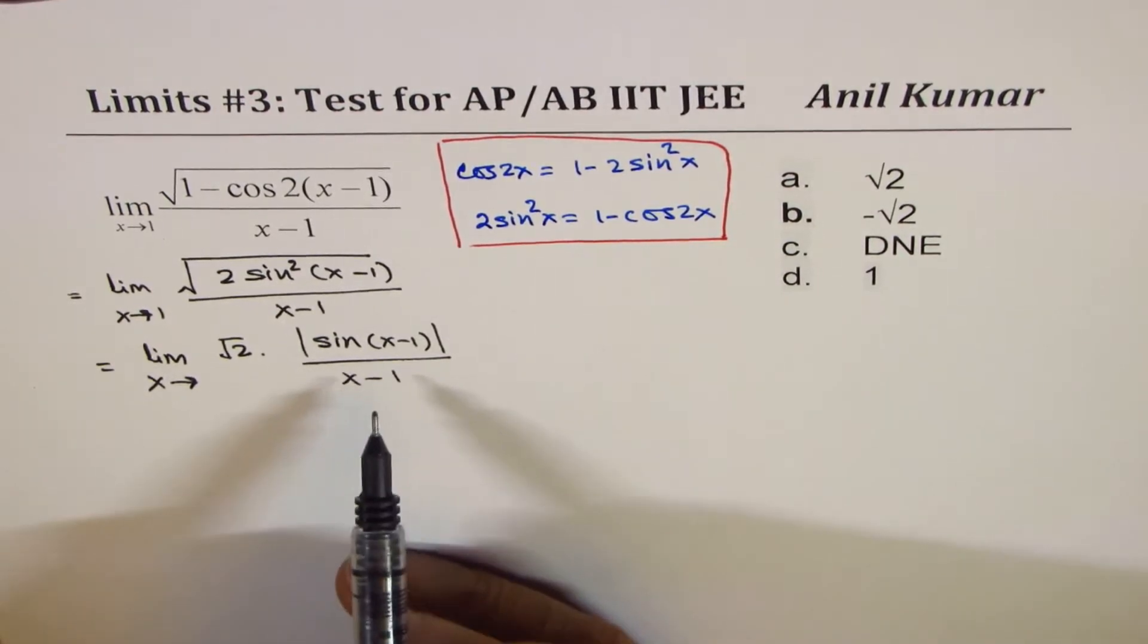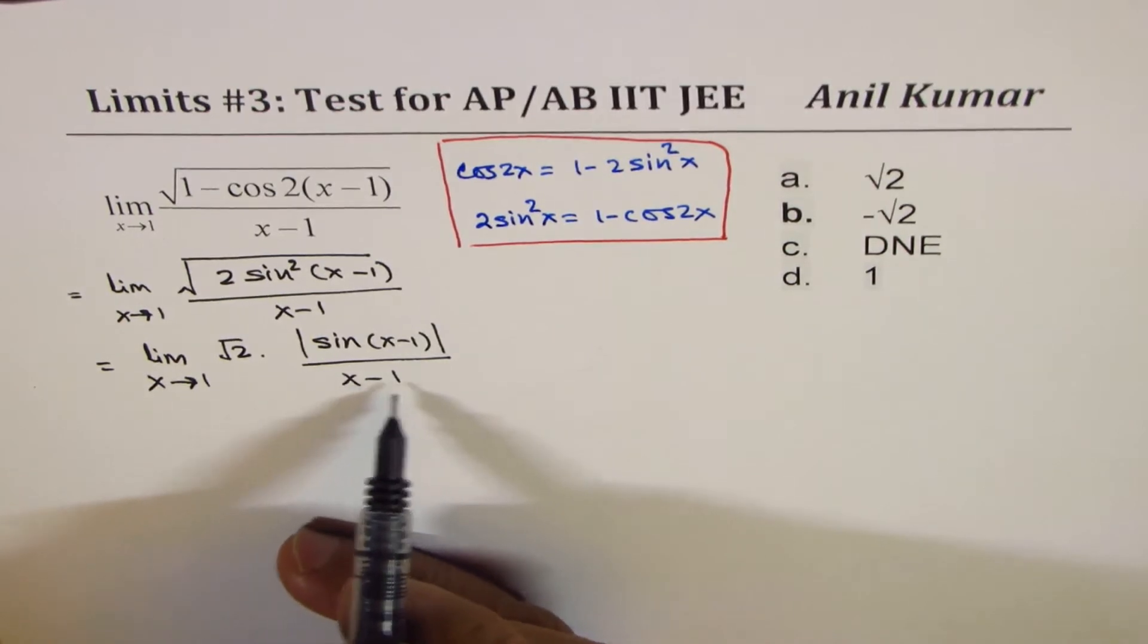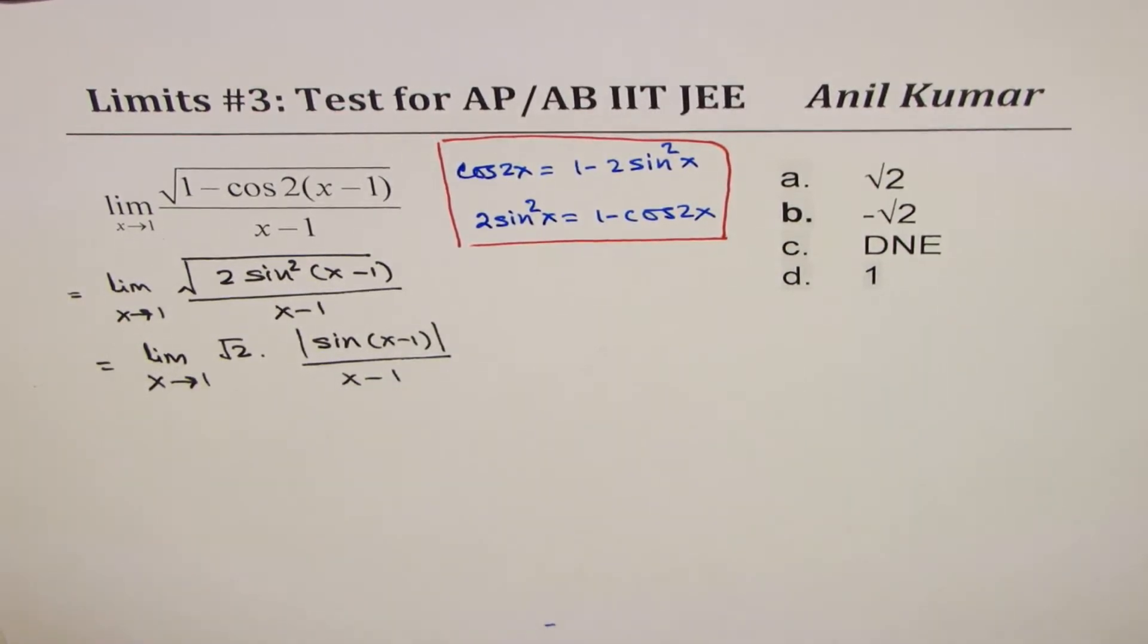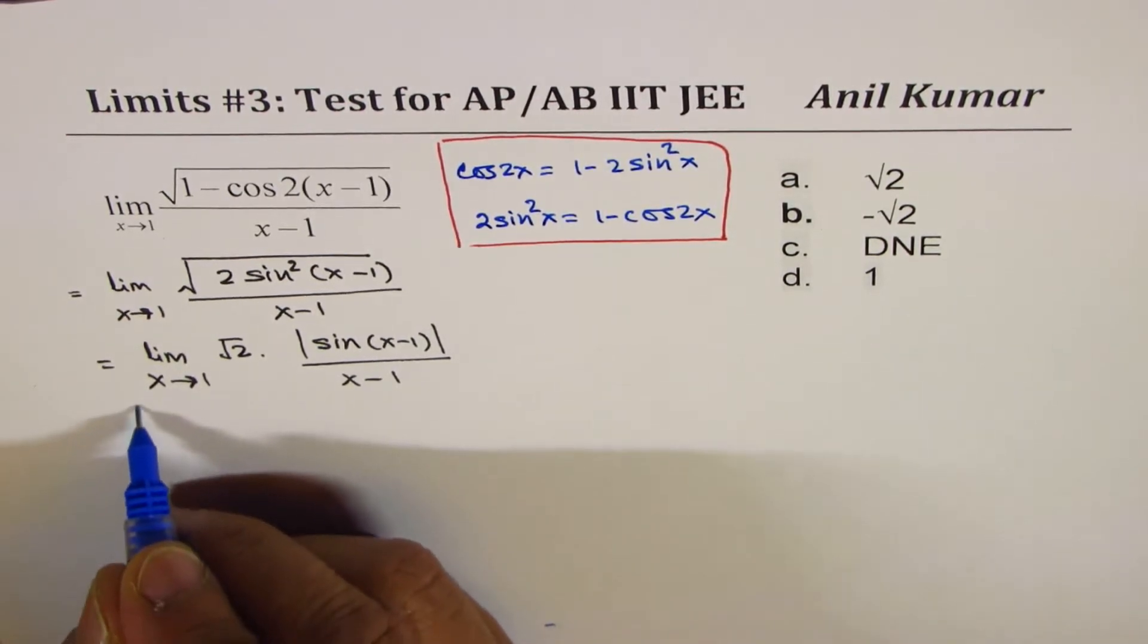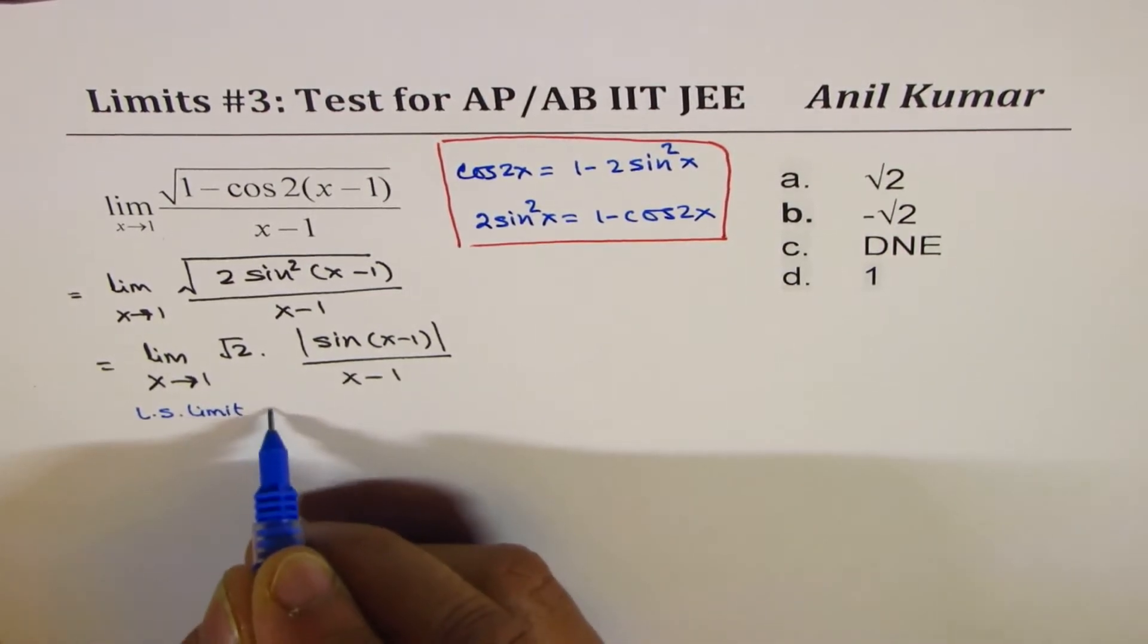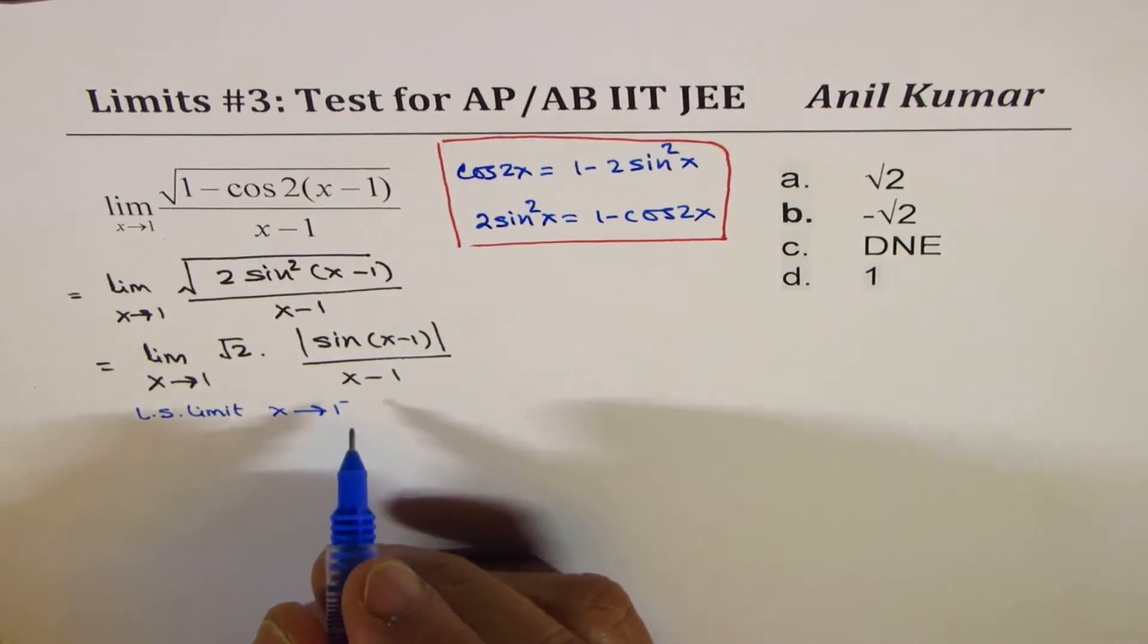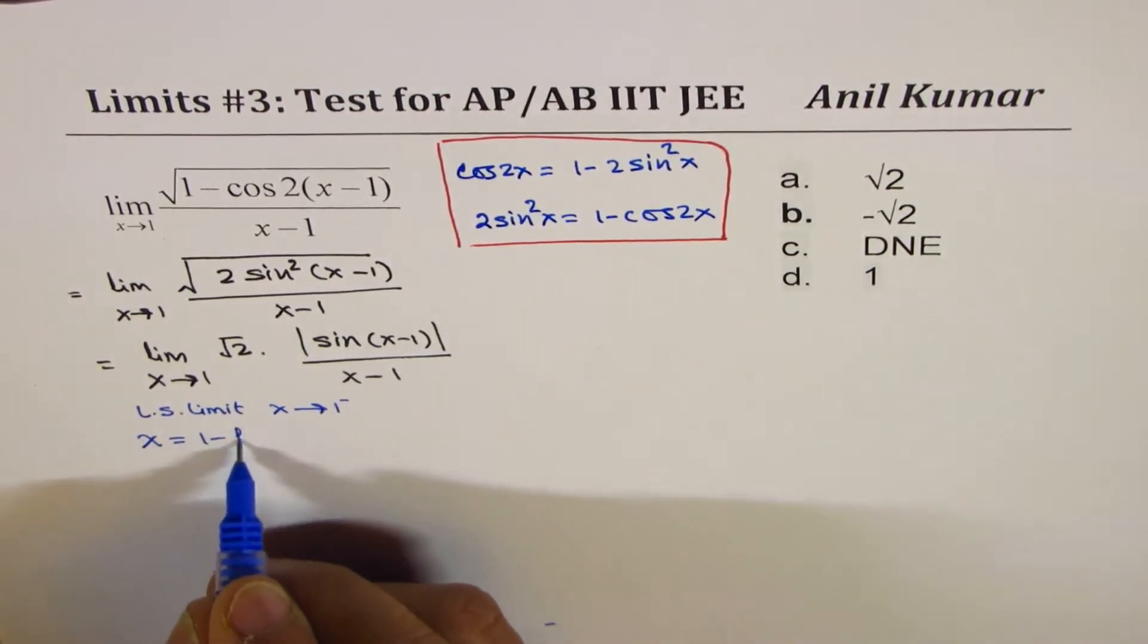Now, see, here is the tricky part. x is approaching 1, so we could approach 1 from left side and from right side. Now, if you are approaching from the left side, when we are approaching from the left side, we can say let x equals 1 minus h.